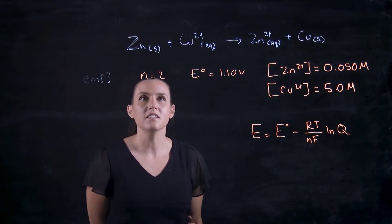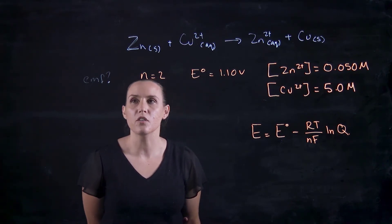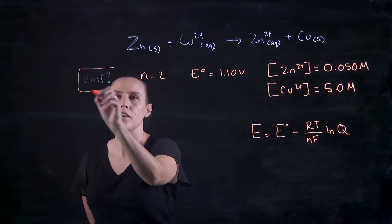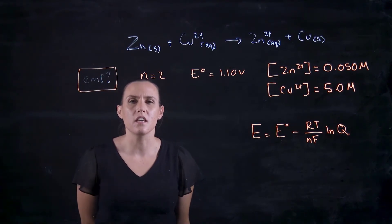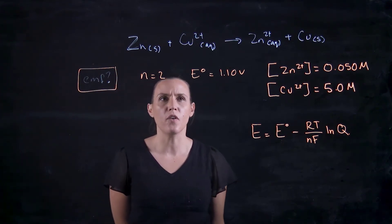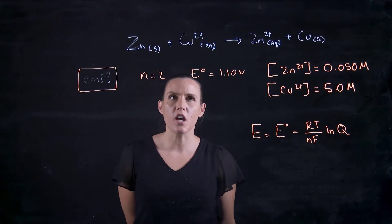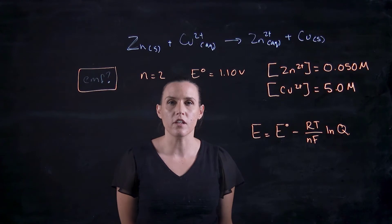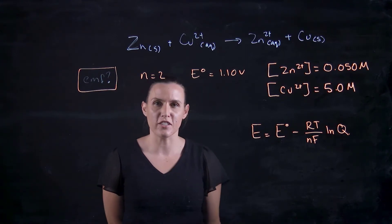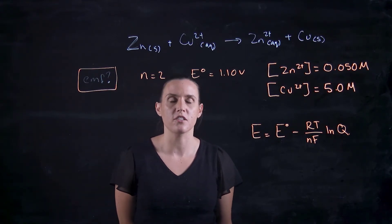So with this question here, we are going to look at solving the EMF. So what is the actual volts in the system over time? Over time, you'll have the system's energy decreasing as the concentrations of the reactants and products change over time.